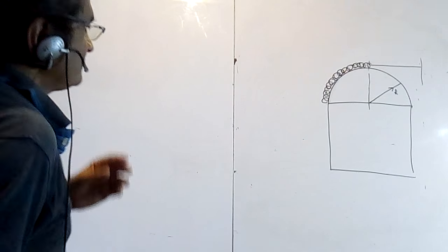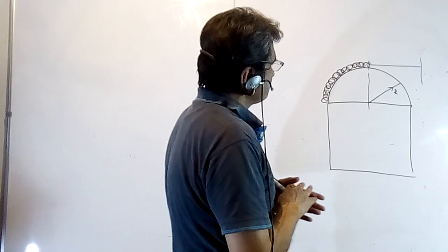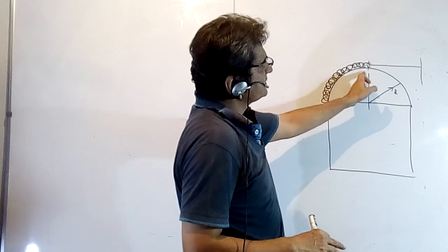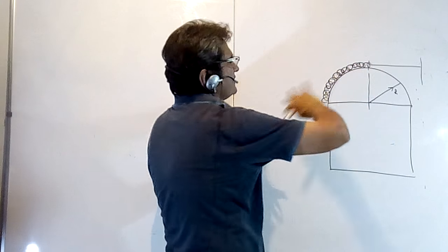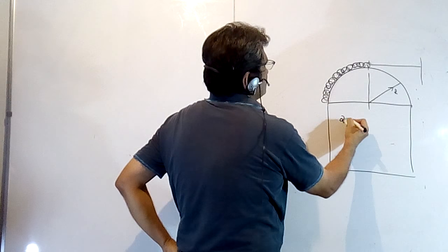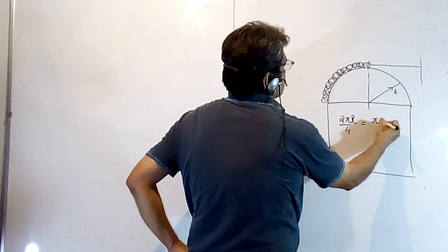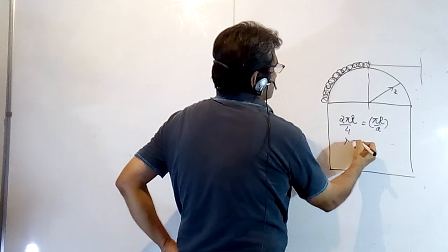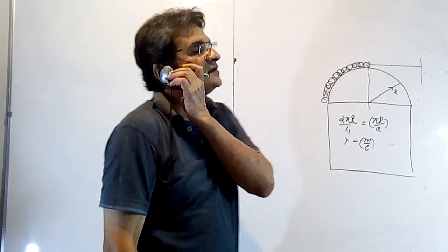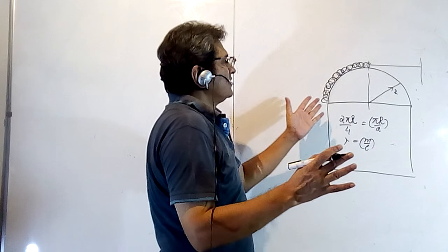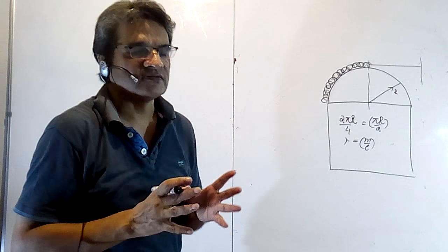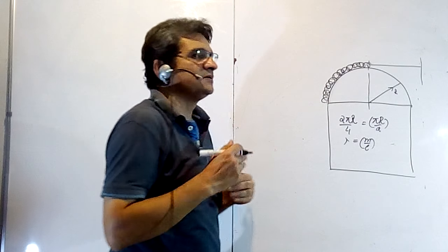In this lecture I will solve the chain problem where a chain is kept on a hemisphere. I want to find the velocity of the chain when the top part comes to a point — basically when the chain is occupying a quarter of the ring. The length of chain is 2πr/4 = πr/2, and let lambda be mass per unit length. I will solve this by the differential equation method to remove the fear of such problems and build confidence.